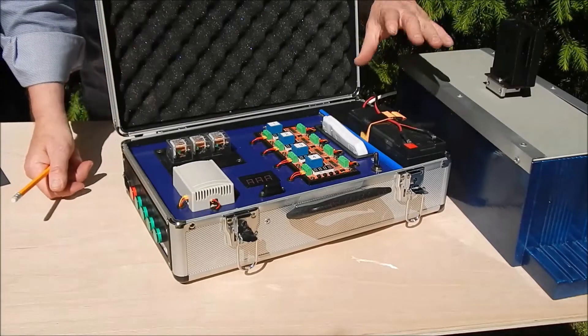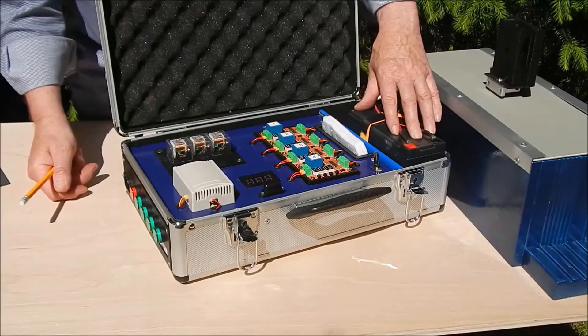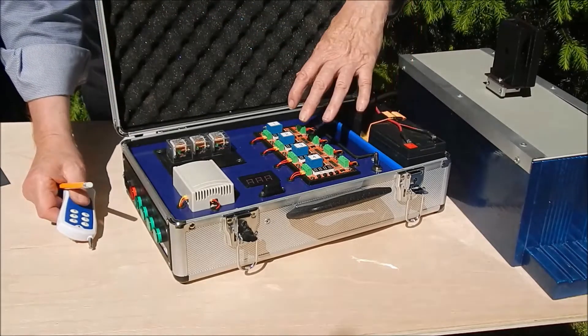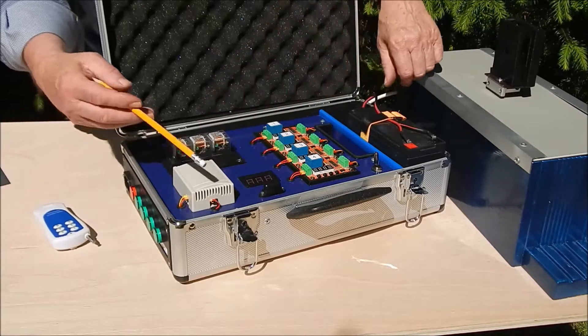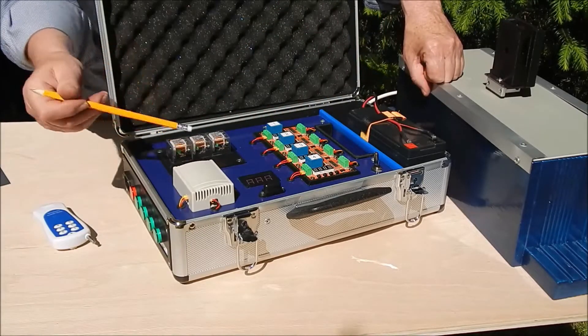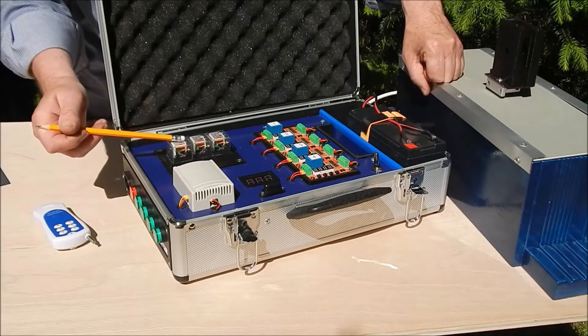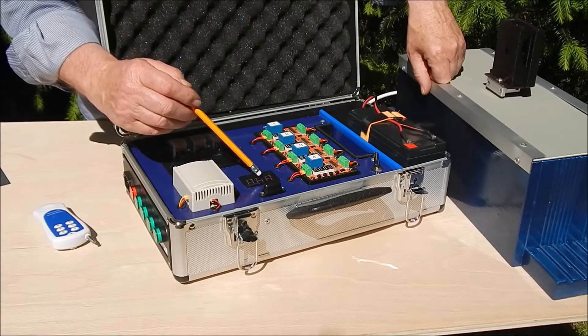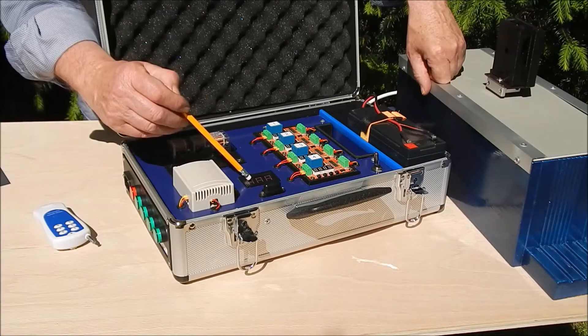We've got a 12 volt lead-acid battery there, rechargeable of course, and the radio transmitter. We've got a six channel radio receiver, 40 amp auto relays, indicator for the battery voltage, 12 volt battery voltage.